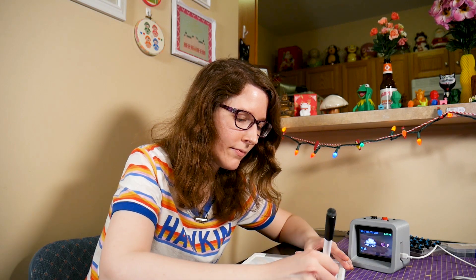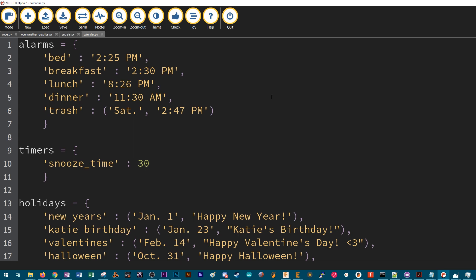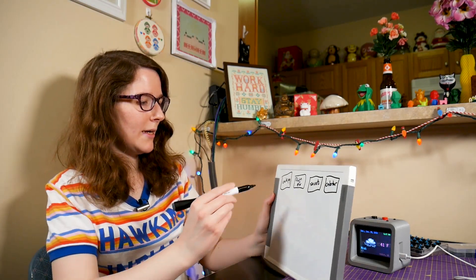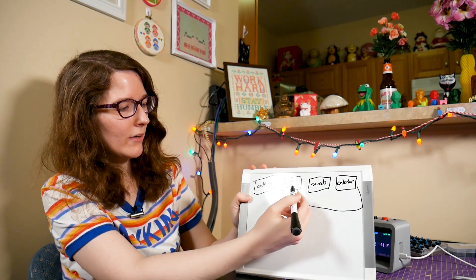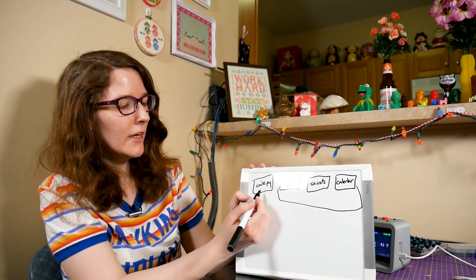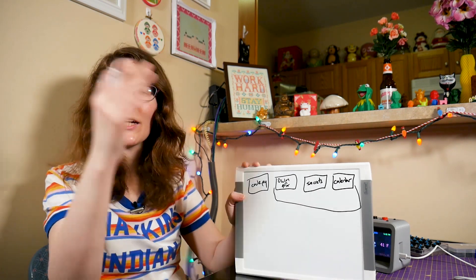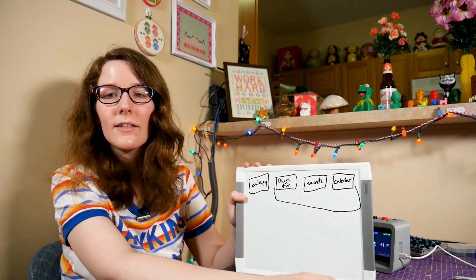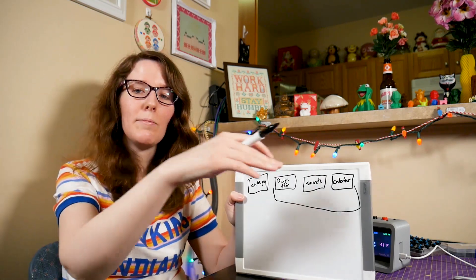And then there's one last thing — it's called the calendar file, and the calendar file is where all your alarms are living. The best way to think about it is that these three files — the open weather map graphics, secrets, and the calendar — they're kind of helping out code.py. Code.py is the quarterback in the football game. It's throwing the ball. These other files are the defense — they're knocking everyone down so that code.py can keep throwing the ball.